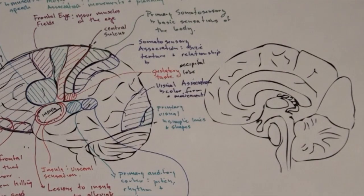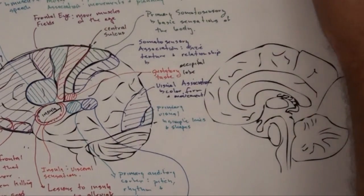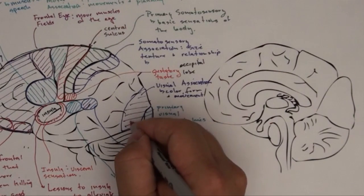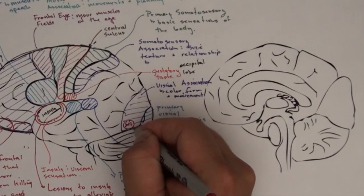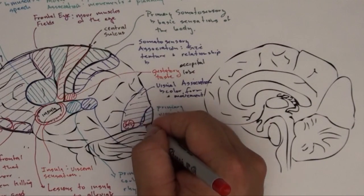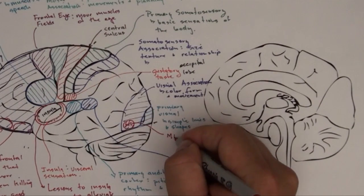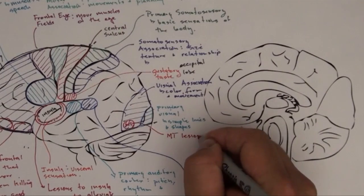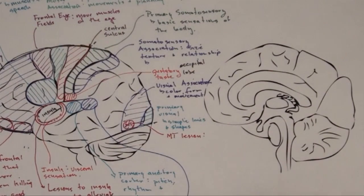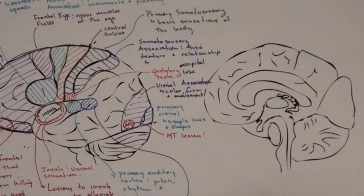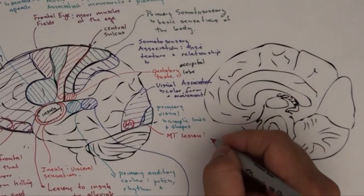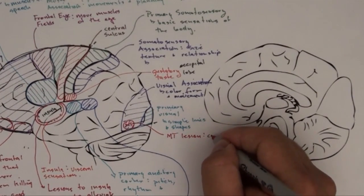I'm going to do two lesions here, and I'm going to put one of them over on the other side, but I'll put one right here. There's an area right here called MT, and there's a lady in Switzerland. You can find her on the HHMI website, so Howard Hughes has a little write-up on her. She had a lesion there, and she could not see motion anymore.